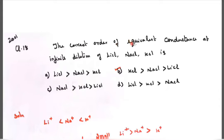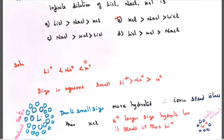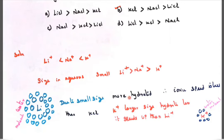The correct order of equivalent conductance at infinite dilution of lithium chloride, sodium chloride and potassium chloride. At infinite dilution, in aqueous state K+ is greater than Na+ is greater than lithium+ because size in aqueous is small. Li3+ is greater than Na+ and K+. If it's small size, it's more hydrated. If it's small in size, the hydration is small. Therefore, the speed of ion is less.